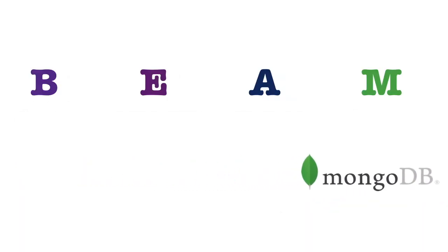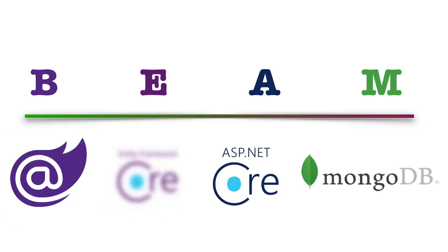But have you heard about BEMA — which is Blazor, ASP.NET Core, Entity Framework, and MongoDB? Blazor acts as a single page framework just like Angular and React, and Entity Framework here is actually a MongoDB driver which acts like an ORM, ASP.NET Core acts as a backend server framework, and MongoDB as the database. Really exciting — so let's get started.